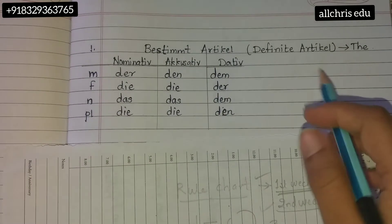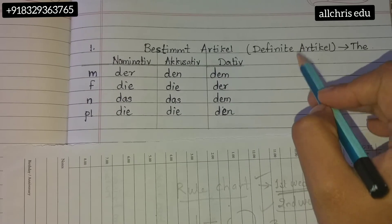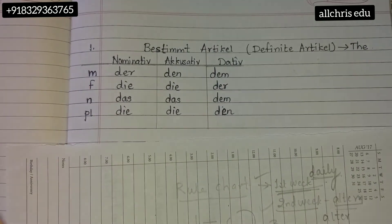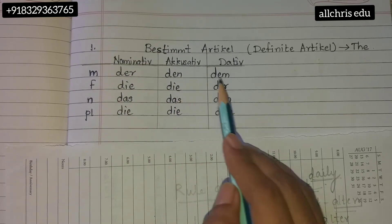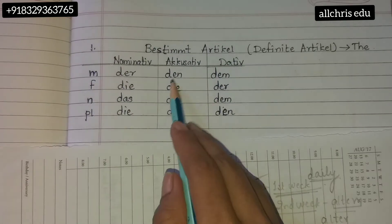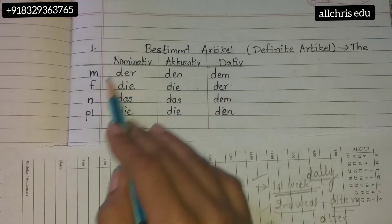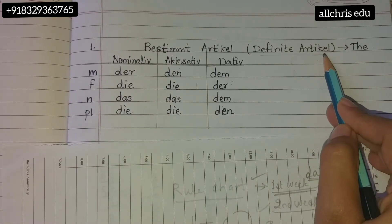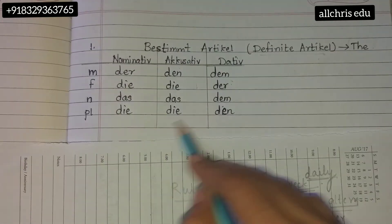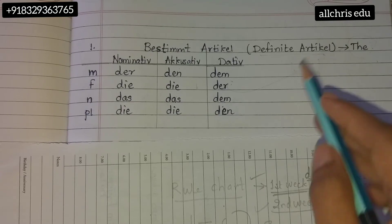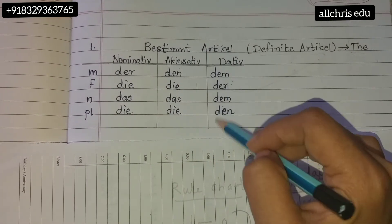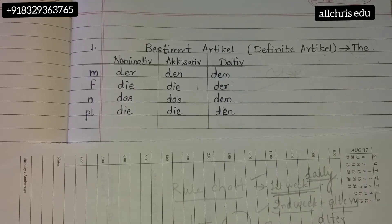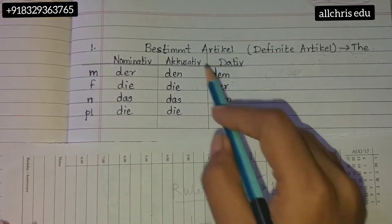This is the bestimmter Artikel — definite article — rule chart. It has three columns: nominative, accusative, and dative. Nominative is the doer, accusative is the one on whom we do the action, and dative is the receiver. In English we have only one word 'the,' but in German there are many words for 'the' according to their cases.